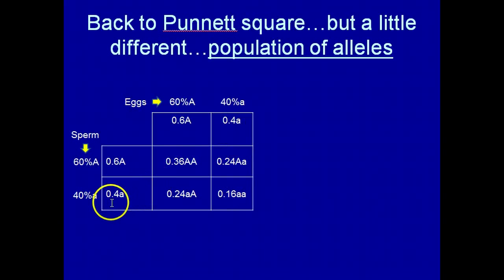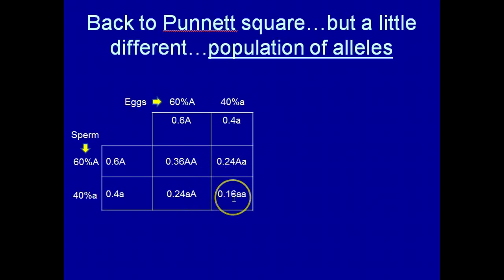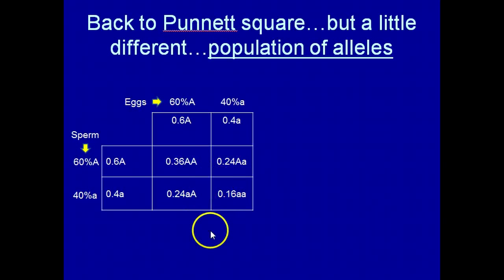So, 36% of the individuals in the next generation will be homozygous dominant, 48% will be heterozygous, and 16% will be homozygous recessive. If you add these totals up — 0.36 + 0.48 + 0.16 — that equals 1. What we have done here is essentially derived the Hardy-Weinberg equilibrium equation using a simple Punnett square.